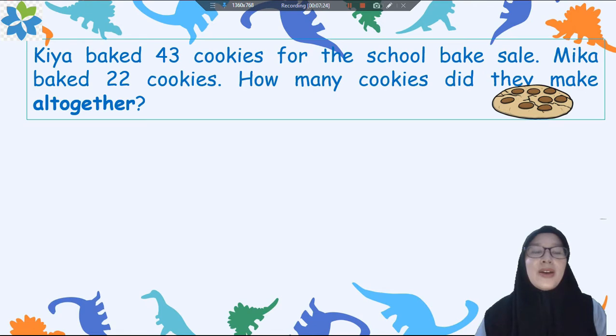And let's see the other ways to solve the problem. Now let's read the second problem. Kiya baked 43 cookies for the school bake sale. Mika baked 22 cookies. How many cookies did they make altogether? Kiya sudah memanggang 43 cookies untuk dijual di sekolah bersama-sama dengan temannya. Kemudian Mika memanggang 22 cookies. Pertanyaannya, ada berapakah cookies yang sudah mereka buat bersama?